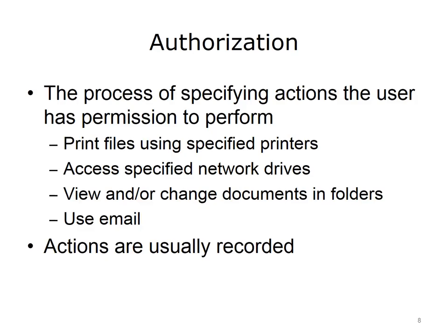After authentication, the next step in preventing computer security breaches is authorization. Authorization is the process of specifying a user's permissions — in other words, it determines what actions the user has the authority to perform. To allow users to store files on a server, the network would first authenticate and then authorize the users, granting read and write access to a specific network drive. Examples of permissions include the ability to print files, access specific network drives, view and change documents and folders, or use email. As an additional security feature, a user's actions are usually recorded, and those records come in handy if a security breach needs to be investigated.